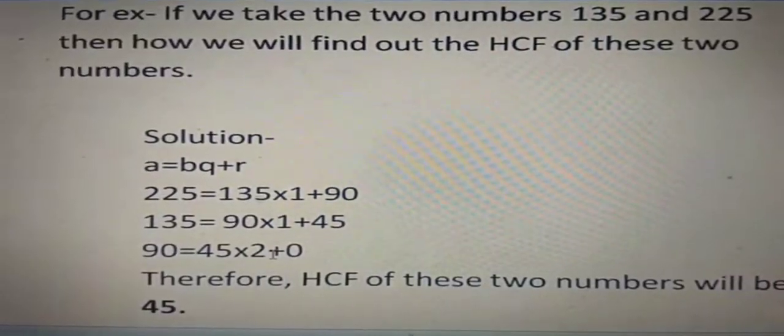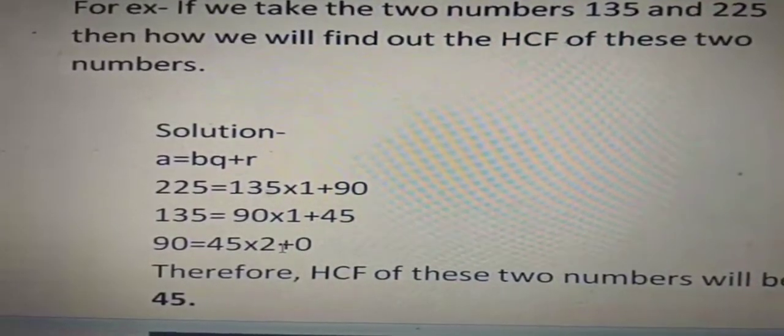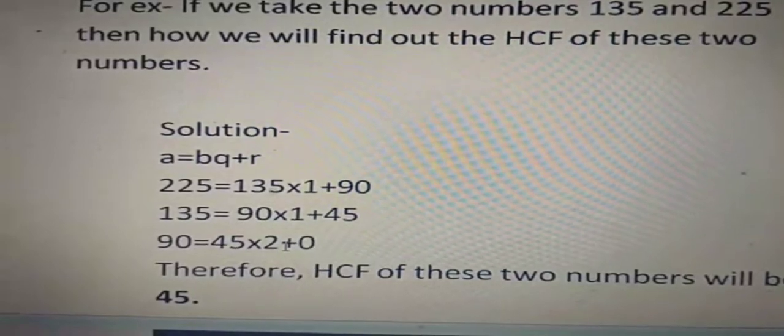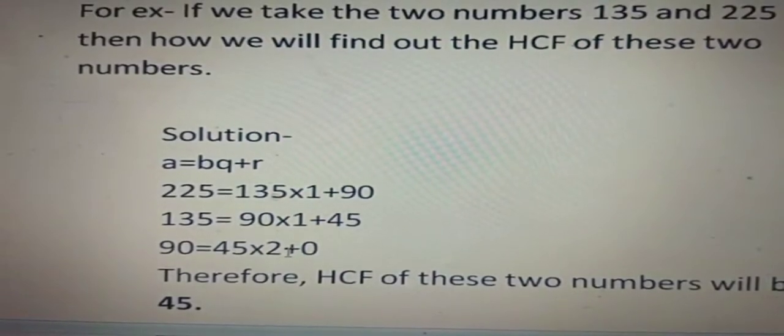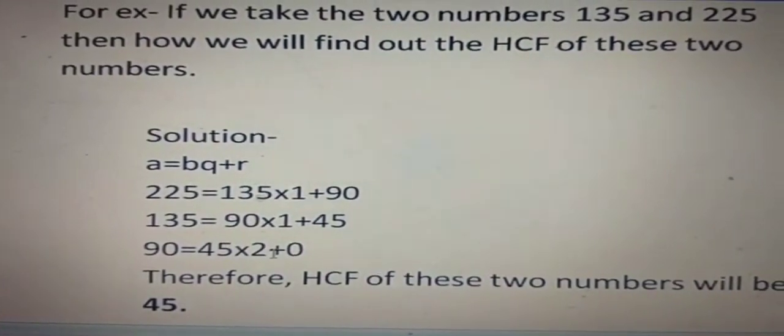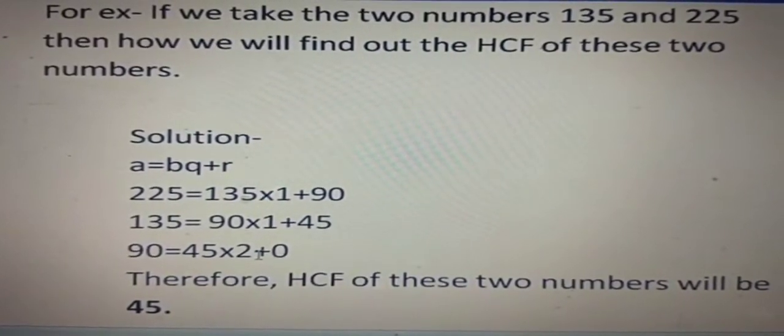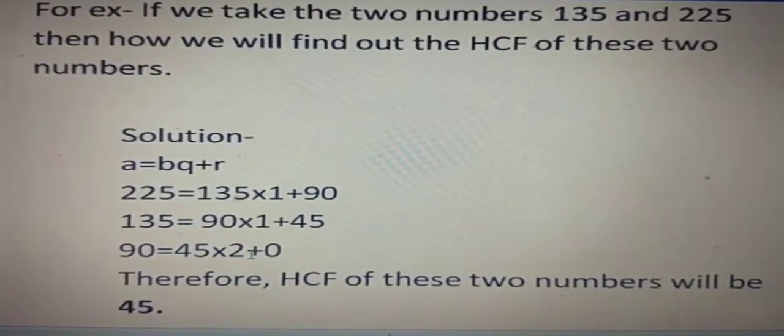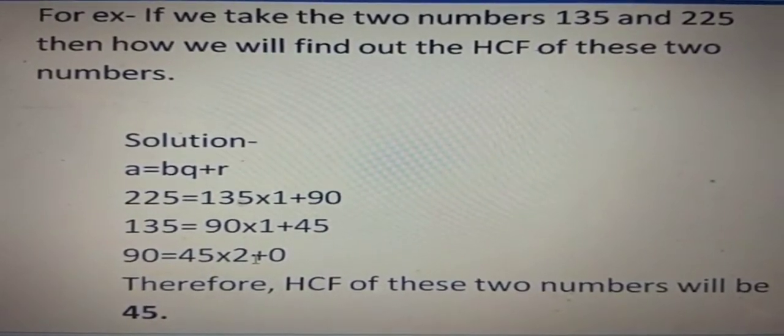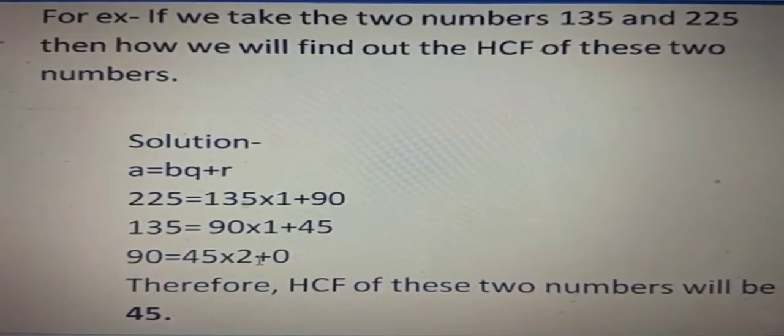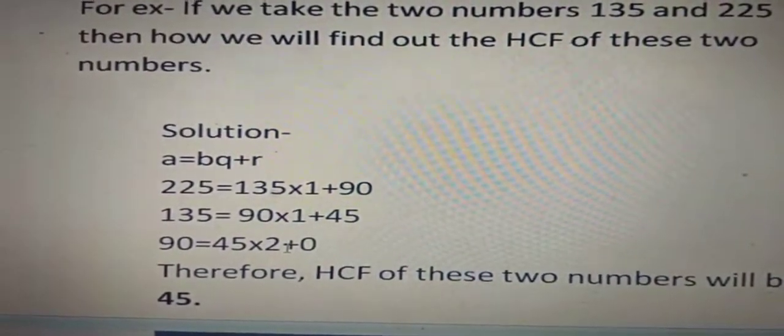Now we are moving towards our first example. If we take two numbers 135 and 225, then how we will find out the HCF of these two numbers. For this I am giving you the solution: a equals bq plus r, where a equals 225 and b equals 135. 225 equals 135 times 1 plus 90 in the first step. In the second step, 135 equals 90 times 1 plus 45.